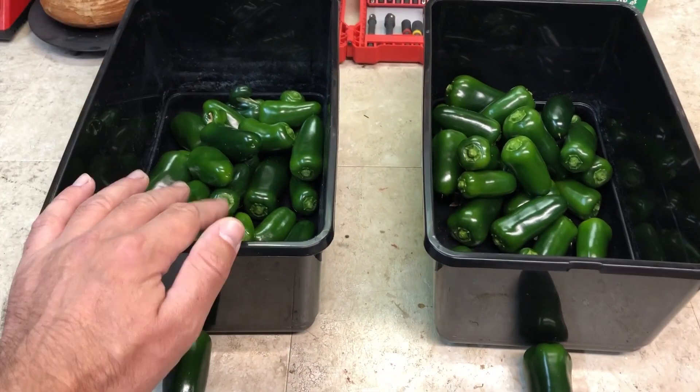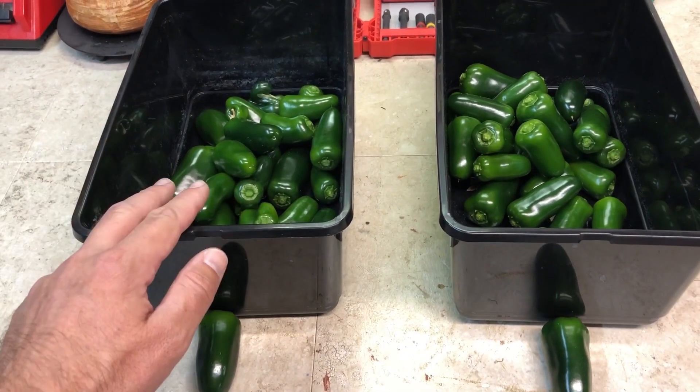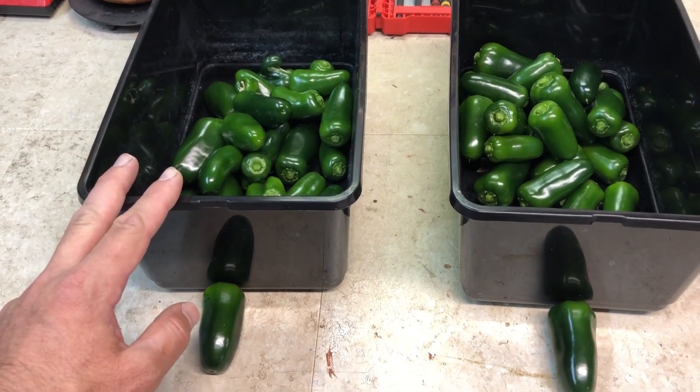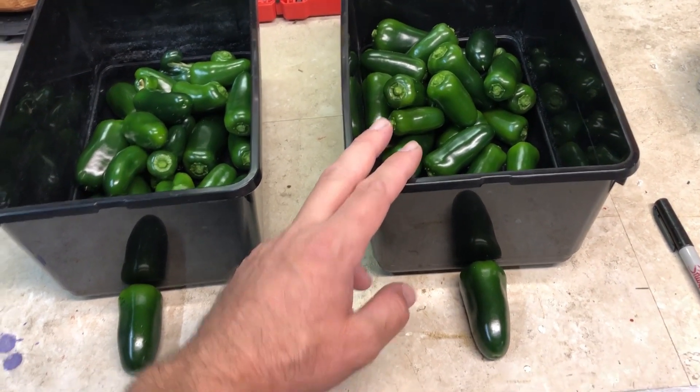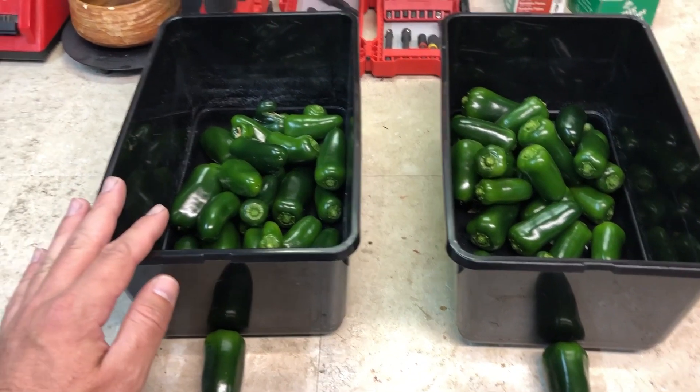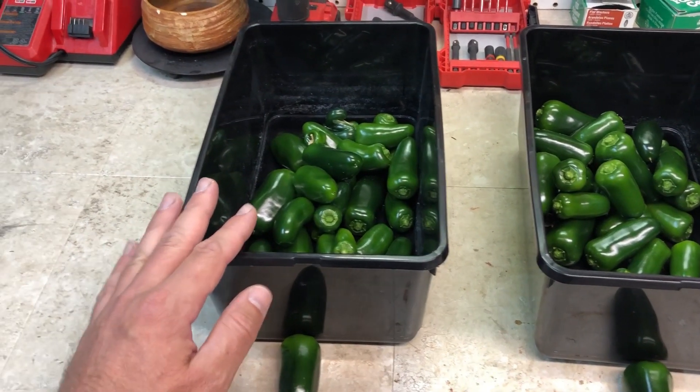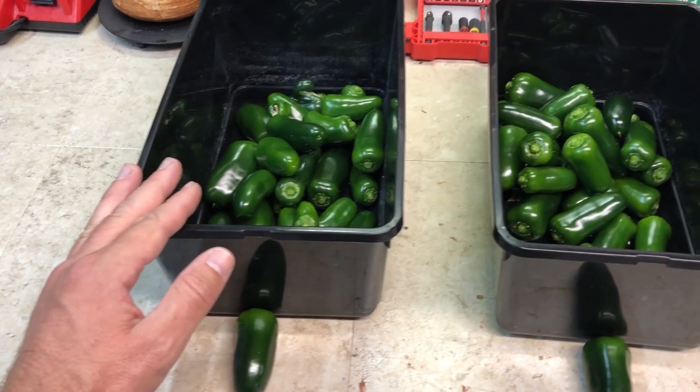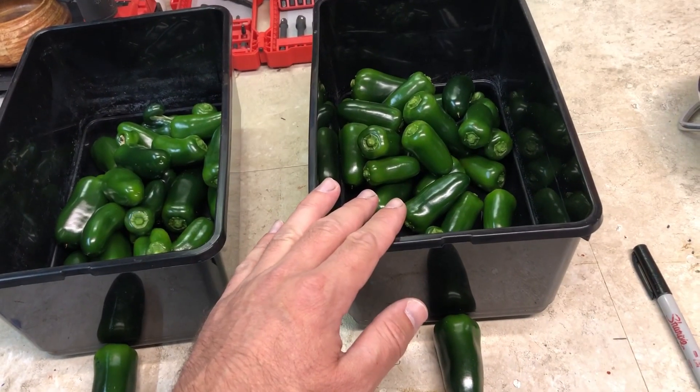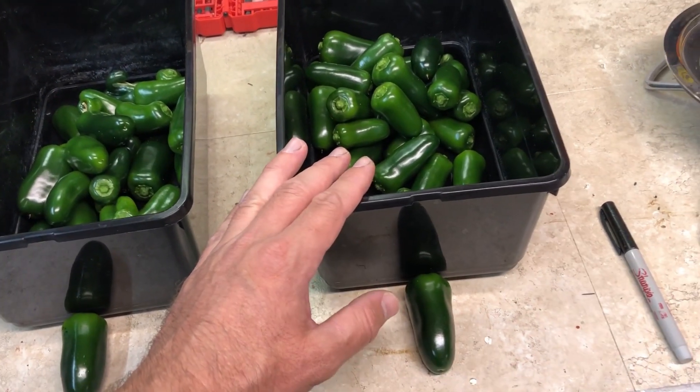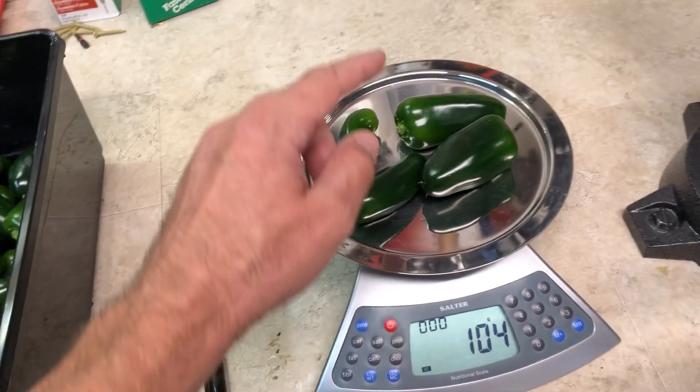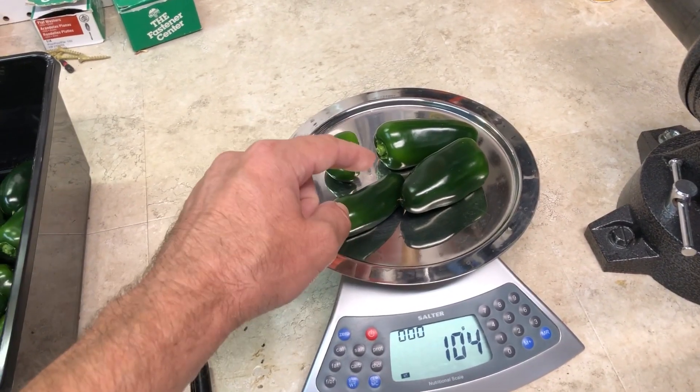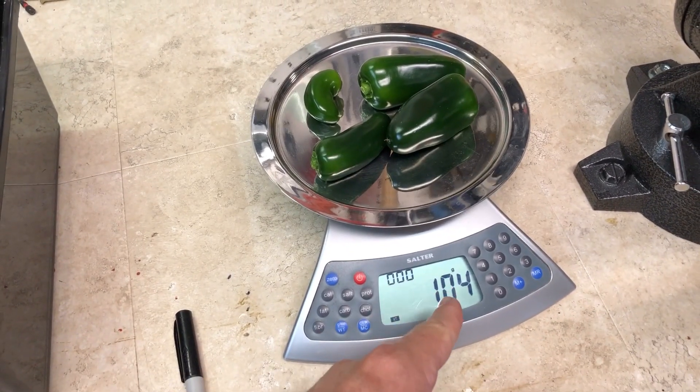I counted everything up and worked out the numbers. The Sansi plant produced 36 total peppers, and the Hidden Harvest plant produced 33 total peppers. Taking the total quantity and total weight, it produced an average weight of 20 grams per pepper under the Sansi light, and 18.75 grams per pepper on average under the Hidden Harvest light. And here is how much more peppers by weight that the Sansi light produced versus the Hidden Harvest: 104 grams.